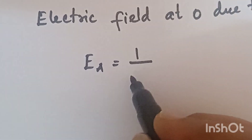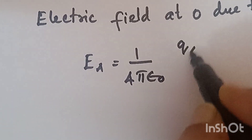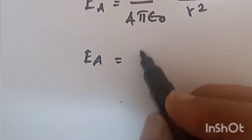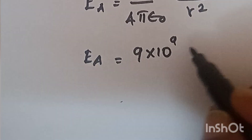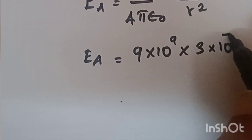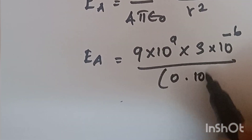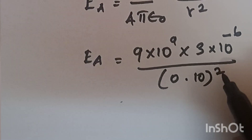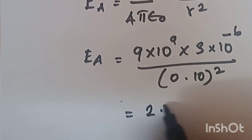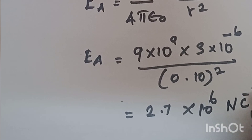The electric field due to QA is: E = (1/4πε₀) × QA / r². Substituting: 9 into 10 power 9 into 3 into 10 power minus 6, divided by 0.10 whole square. This gives us the field due to QA.